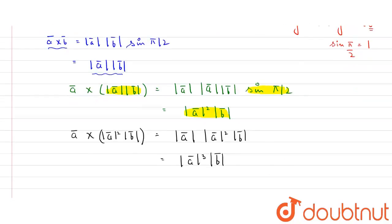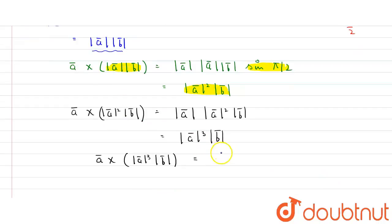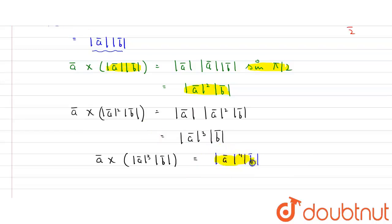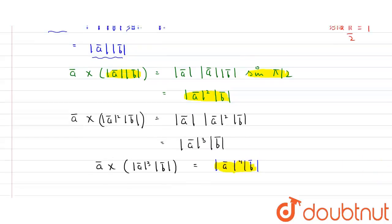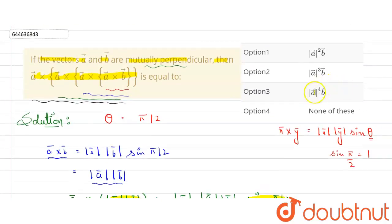Crossing this result with a one more time: again sine will be 1, so we get magnitude of a raised to the power 4 times vector b. This is the final answer. Looking at the options, option three matches our answer, so option three is the correct answer.